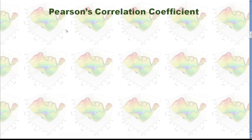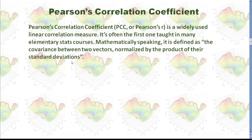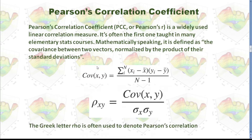Let's take a look at Pearson's correlation first. Pearson's correlation can be used to measure linear relationship. This is how we calculate it: first, we calculate the covariance between two vectors, and then we use this covariance divided by the standard deviation of x and the standard deviation of y to calculate rho. The Greek letter rho is often used to denote Pearson's correlation.